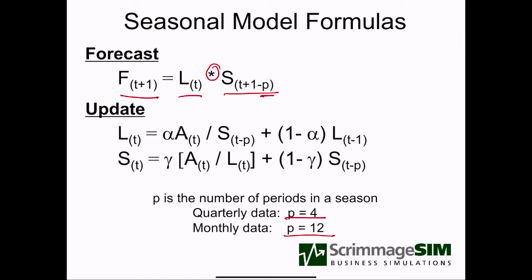When we update the level, we have to take into account the seasonal factor. The level is what sales would be without the impact of the season. So when we're looking at our actual sales data, we need to adjust out the seasonal factor that we were using to get our forecast. We multiply by a seasonal factor to get our forecast, so if we want to see the underlying level, we take the actual sales and divide by the seasonal factor. When we update the level, we look at the actual data and what we thought the level was — we just have to undo the seasonal impact.